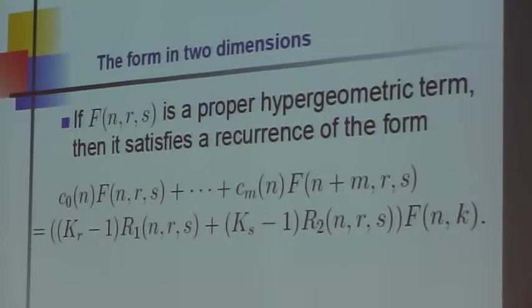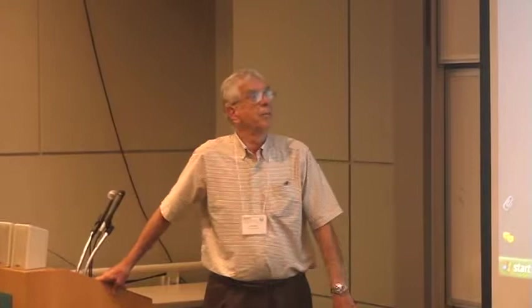Now we have f(n,r,s) in which n is a running variable, and r and s are the two summation indices. So it's a function of three variables, two of which are summation indices.